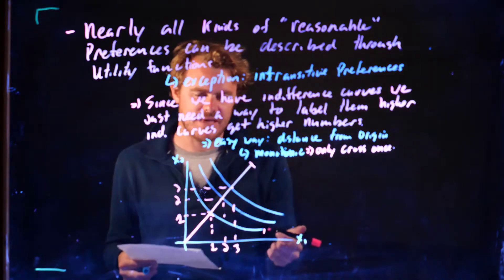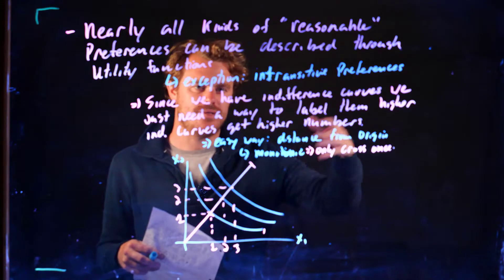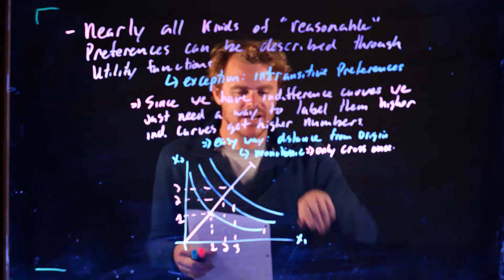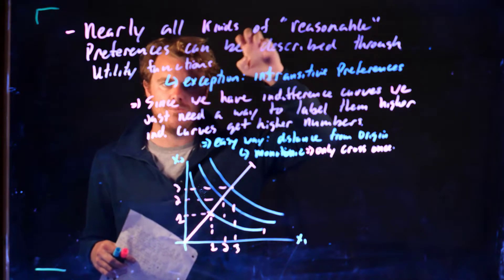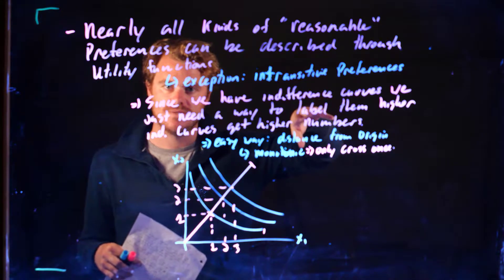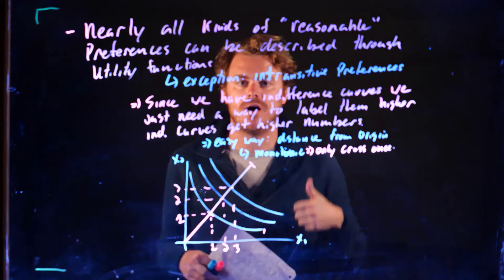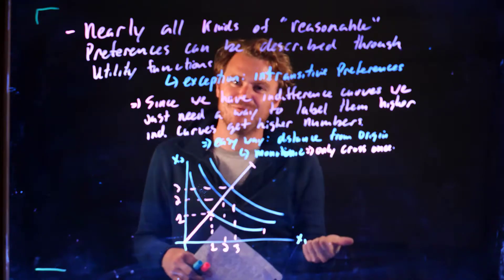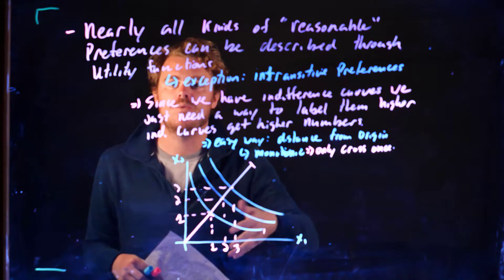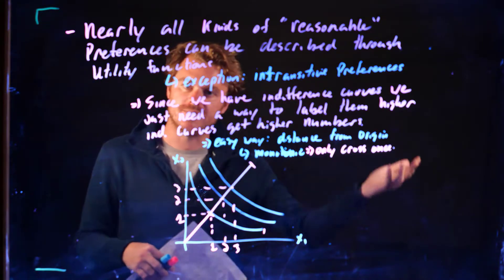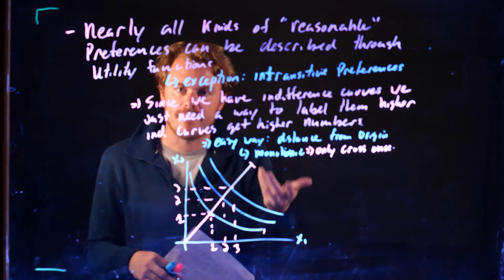That's one way of thinking about coming up with labels for these indifference curves, though it's not necessarily the best way. Next, let's go back to the indifference curves we saw in Chapter 3 — things like perfect complements and perfect substitutes — and think about what the utility functions corresponding to those indifference curves look like mathematically.